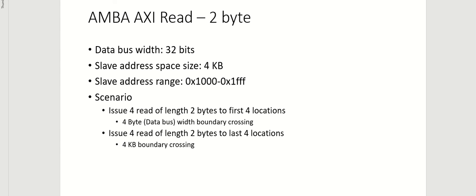Hey, welcome back to the Mastering AXI Protocol series. In this video, we will look at AXI read of two bytes using a 32-bit data bus width, which is four bytes. The scenario we are going to analyze is issuing four reads of length two bytes to the first two locations of this address range.